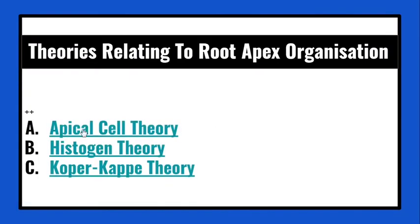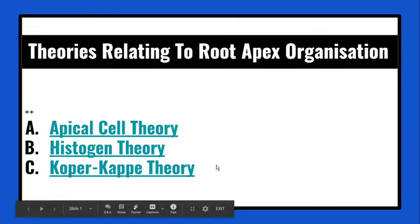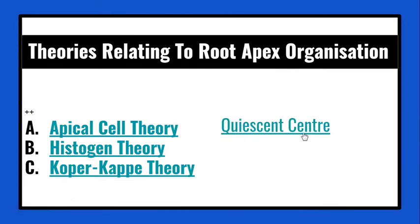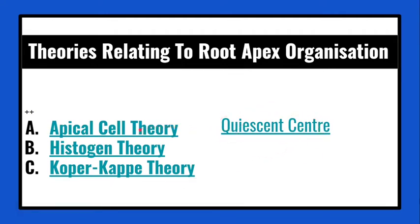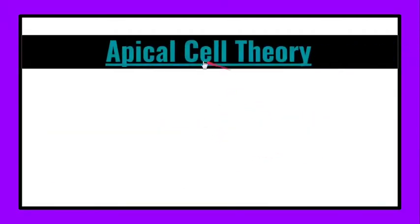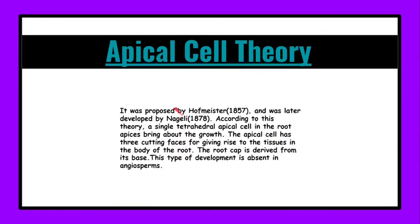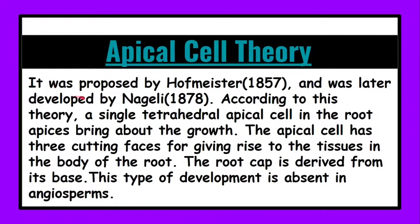Good afternoon students. Today our topic is theories relating to root apex organization and there are three theories: apical cell theory, histogen theory, and korper-kappe theory. With these three theories we also discuss a small topic that is quiescent center.